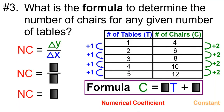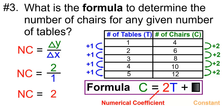Number three: What is the formula to determine the number of chairs for any given number of tables? We'll start by finding the numerical coefficient, which is the change in Y divided by the change in X. The change in Y is plus two, and the change in X is plus one. Two divided by one is equal to two, so the numerical coefficient will be two. Our formula will be C equals two times T, plus or minus the constant. To find the constant, we'll plug in the first set of data: put four where the C is and one where the T is. Two times one is two, and to get from two to four, we'll have to add two more. Therefore, the constant will be plus two.